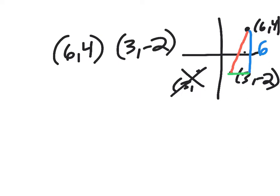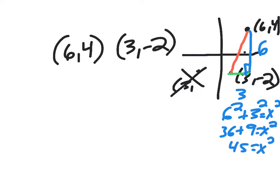From 6 to 3 would be 3, and then I made a right triangle so I could use the Pythagorean theorem and I could say 6 squared plus 3 squared equals x squared. 6 squared is 36 plus 9 equals x squared, so I'd have 45 equals x squared.